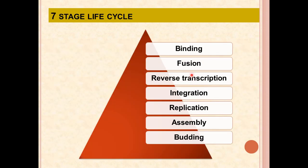This is the seven-stage life cycle. The stages are: binding, fusion, reverse transcription, integration, replication, assembly, and budding. This is what exactly happens to the virus after it enters your body — how it replicates and how it destroys the immune system.